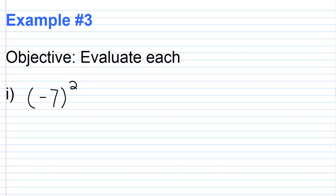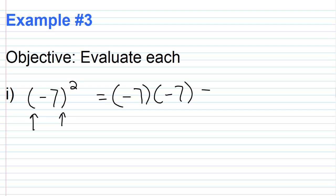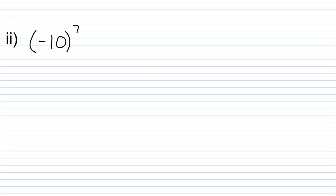For example number three, part one, we have (-7) squared — parentheses around the base. We want negative 7 times negative 7. Negative times negative is positive, and since the exponent is even, the answer is positive. Negative 7 times negative 7 is positive 49.